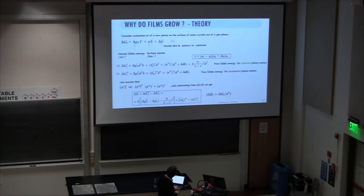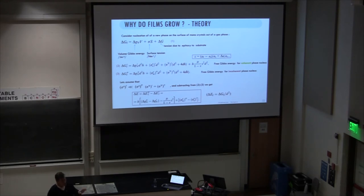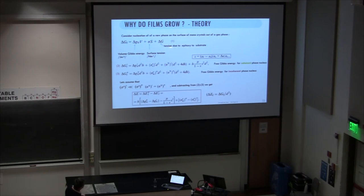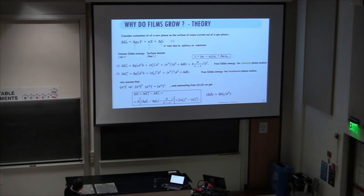Our goal is 2D layer-by-layer growth. Now, formulas — important ones. Growth is thermodynamically controlled by the Gibbs free energy, which we try to minimize. When writing out how a new phase nucleates on a monocrystal out of the gas phase, you get a volume Gibbs energy term competing with surface tension and — critically — a tension term due to epitaxy to the substrate. This is the key term you typically never see in single crystal growth, but it's critical for films.